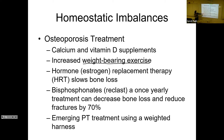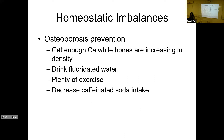There are also treatments like bisphosphonates, which is a once-a-year IV treatment that has been shown to reduce bone loss by about 70% and decrease fractures by 70% — that's pretty significant. There are also physical therapy treatments using a weighted harness or weights on ankles and wrists to put force on bones and stimulate new bone formation in those areas.